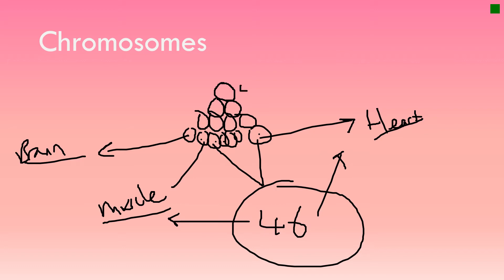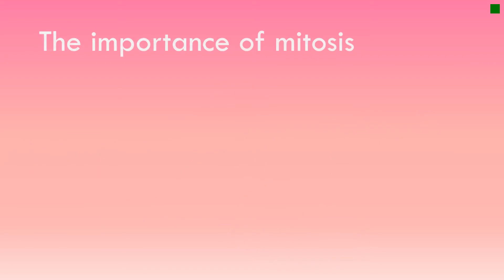The idea is that the first cell was given its 46 chromosomes to start with, and ever since then you have made cells with exactly the same chromosomes. So right now in your body, if you took a cell from your bicep muscle and a cell from your big toe on your left foot, they would have exactly the same chromosomes in them. Now you know what a chromosome is, it's possible to address the first question: explain the importance of mitosis.